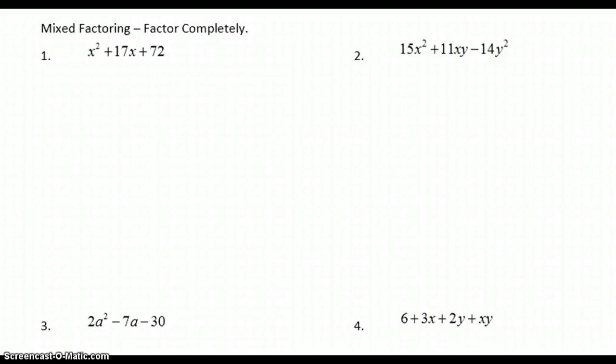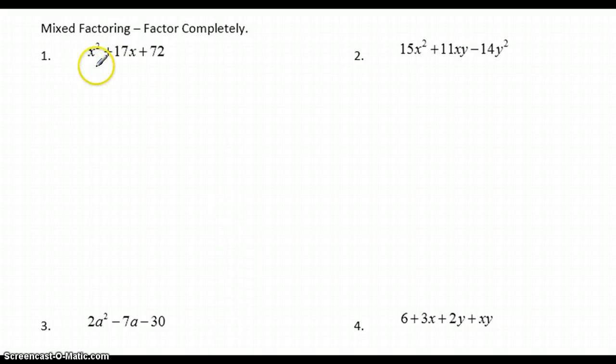I'm going to look at a couple of examples of mixed factoring and identifying what type of factoring I need to do and how I do it. In the first example, I'm looking at a situation where I've got a trinomial — there are three terms — and I notice that the coefficient of my x squared term is 1.